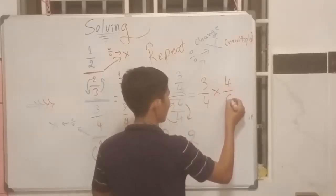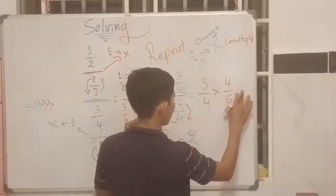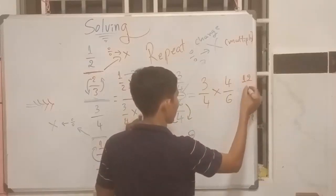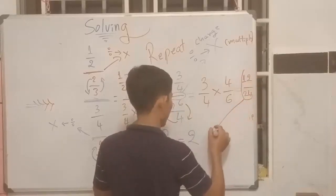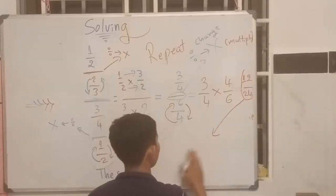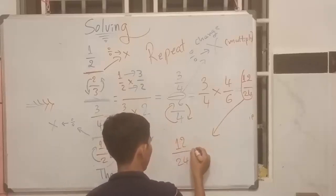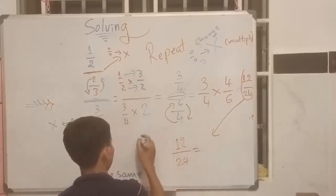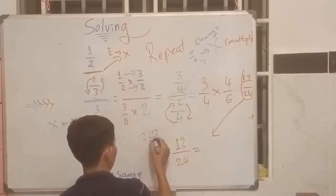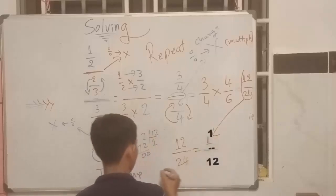Equal: three and four equals twelve, four and six equals twenty-four. About this answer — twelve divide by twenty-four — we can calculate. Twelve divide by twelve equals one, twenty-four divide by twelve equals two. So the answer is one over two.